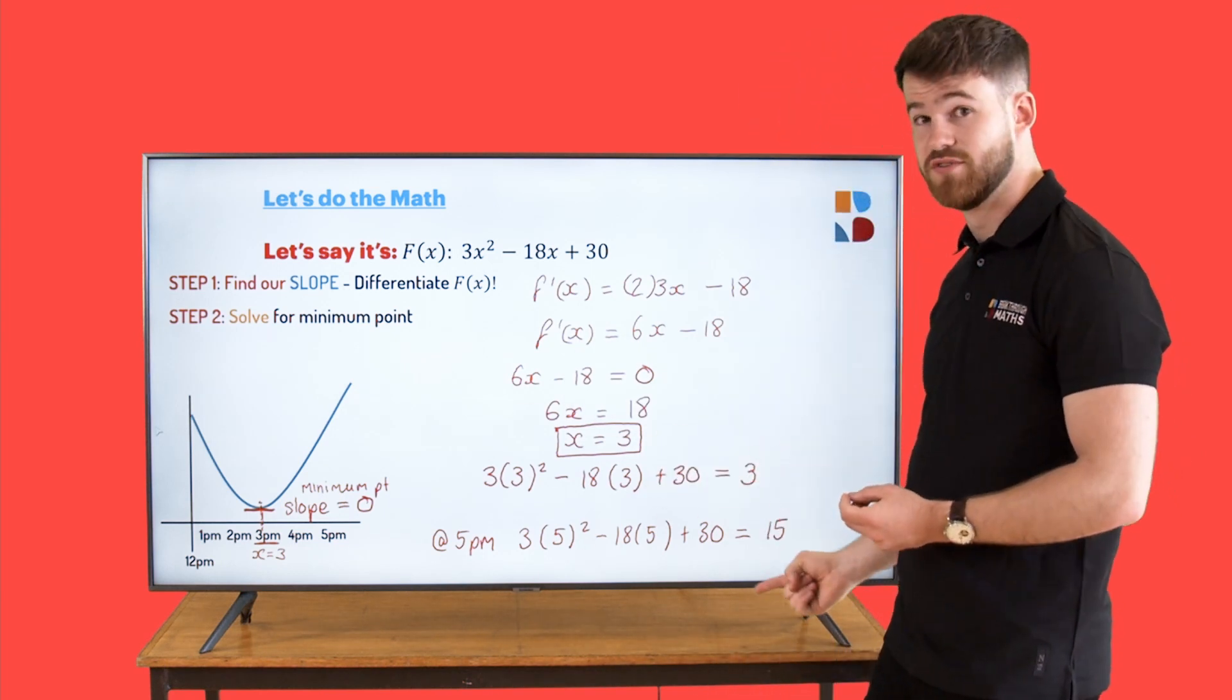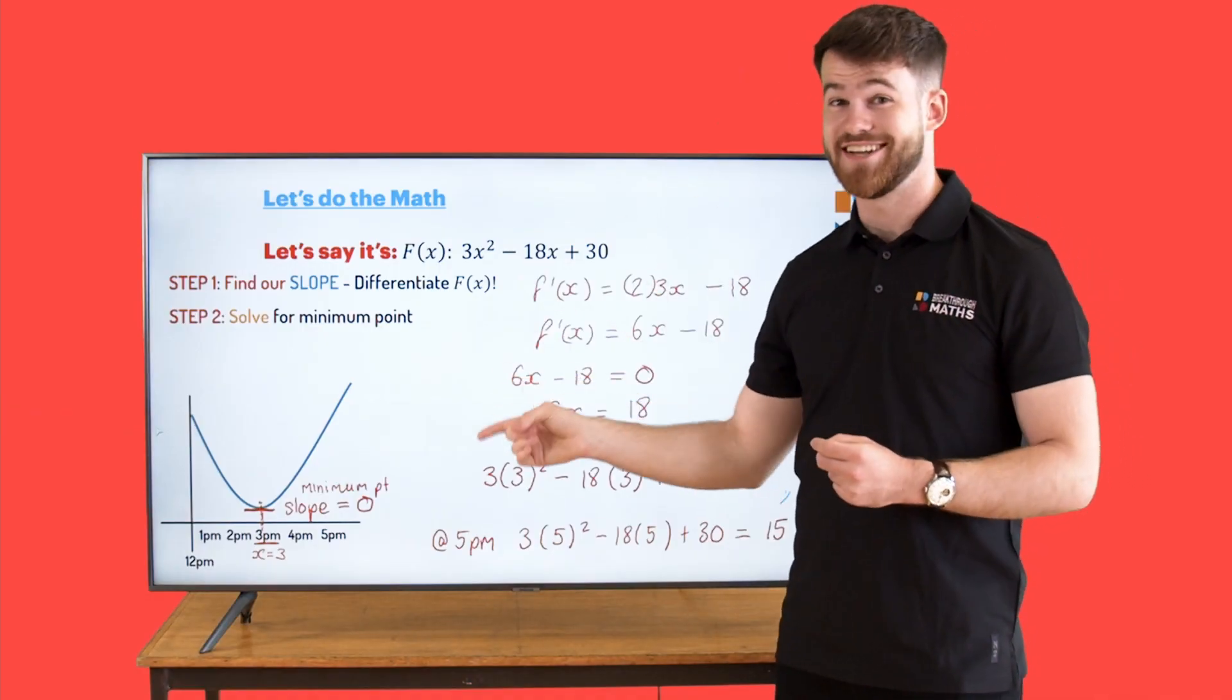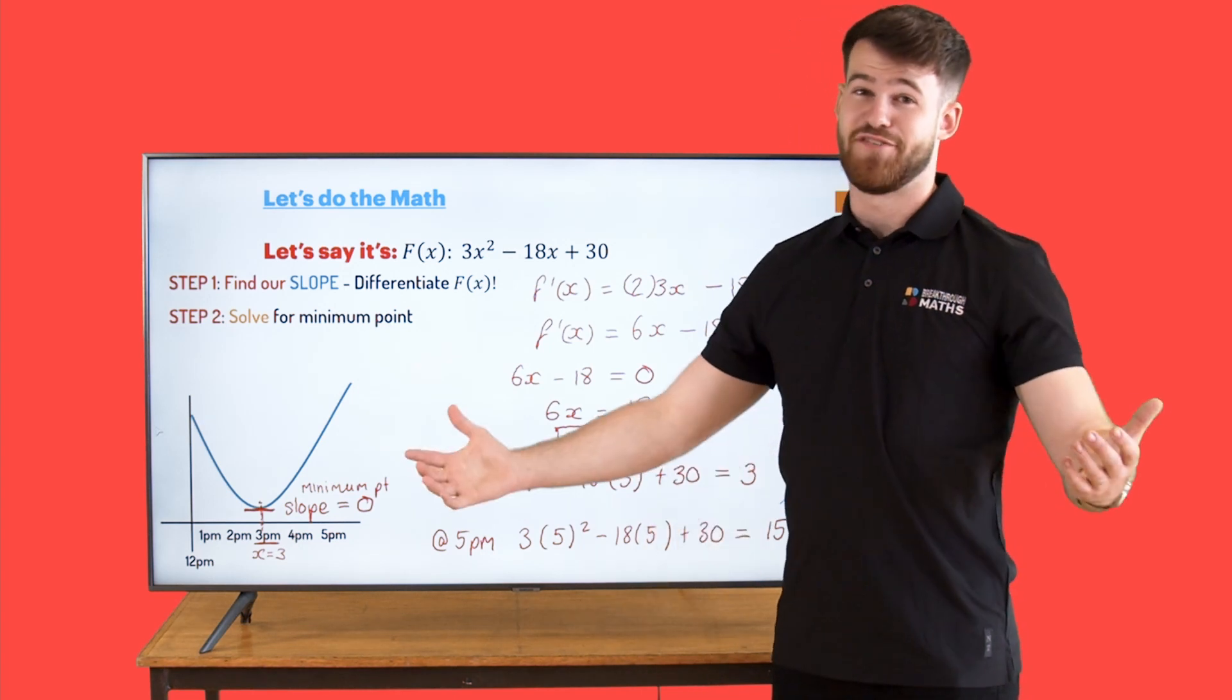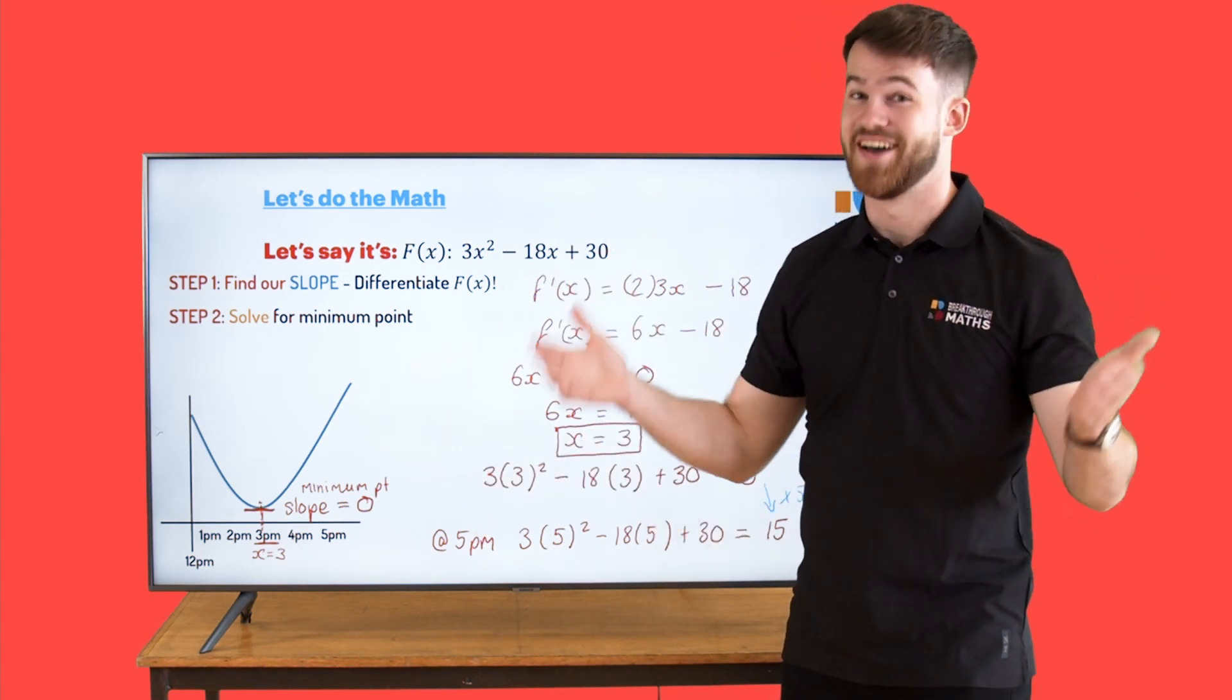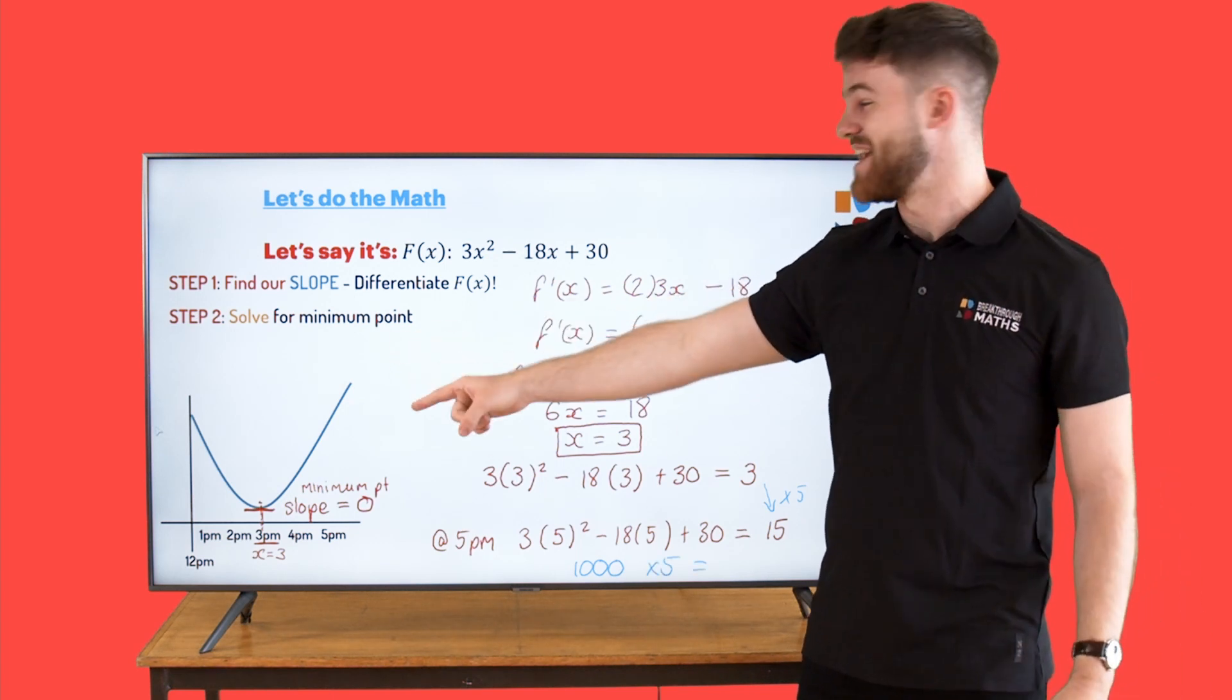You can see it went from €3 to €15. It increased by 5 times. So if we invested €1,000 into GameStop at 3pm, at 5pm we'd have €5,000. So step three is that we're going to Vegas, baby.